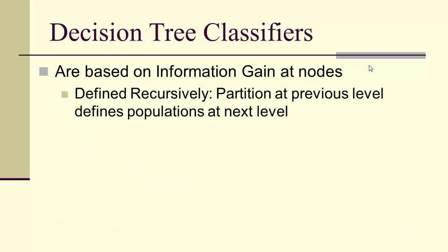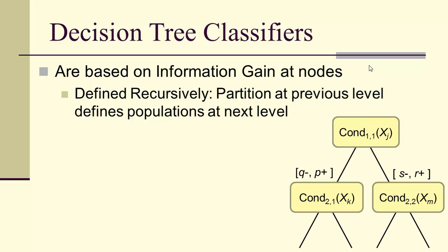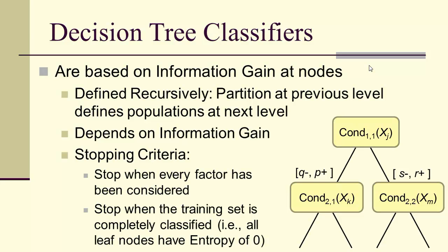Decision tree classifiers are based on information gain at nodes. We define a constructive decision tree recursively — the partition at the previous level defines the populations at the next level. We have a condition, and once applied, we get a partition. We apply conditions to each partition to achieve maximal information gain, and stop when every factor has been considered or the training set is completely classified. In practice, we'll never want to go that far.